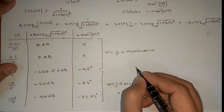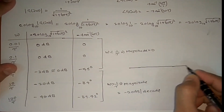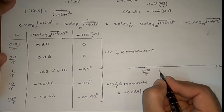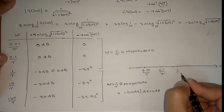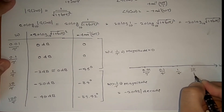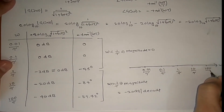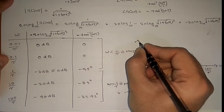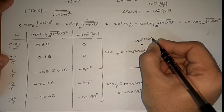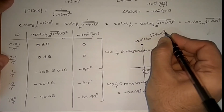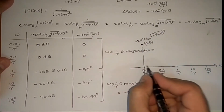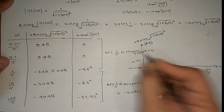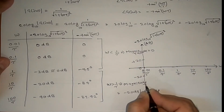Drawing the magnitude plot: on the ω axis, mark 0.01/τ, 1/τ, 10/τ, and 100/τ. On the magnitude axis (in dB), mark 0 dB, ±20 dB, and ±40 dB. Up to the corner frequency 1/τ, the magnitude is 0 dB. After that, it decreases at −20 dB per decade.